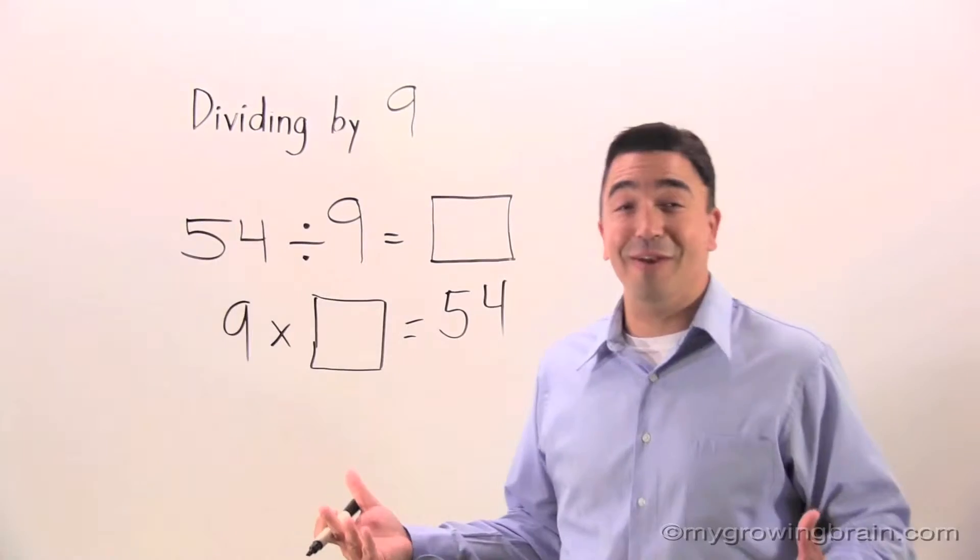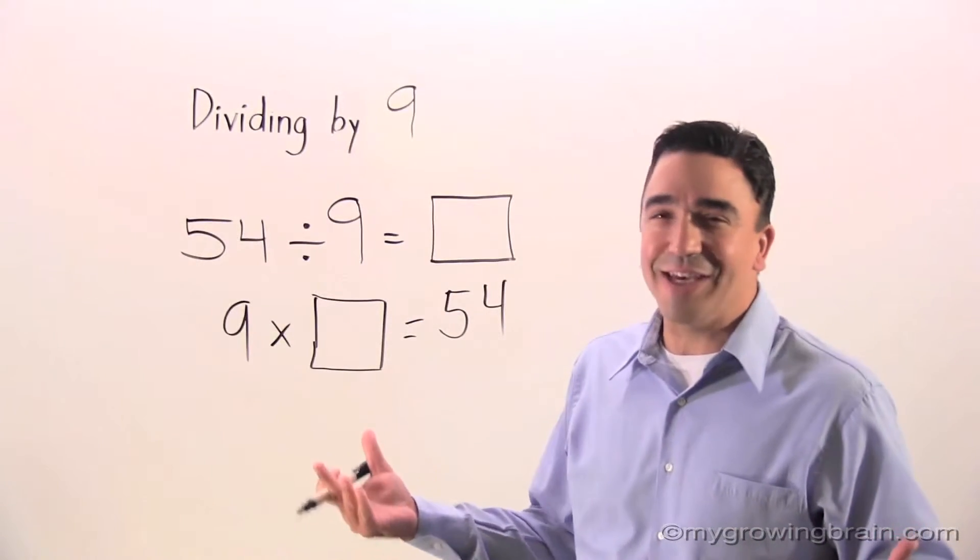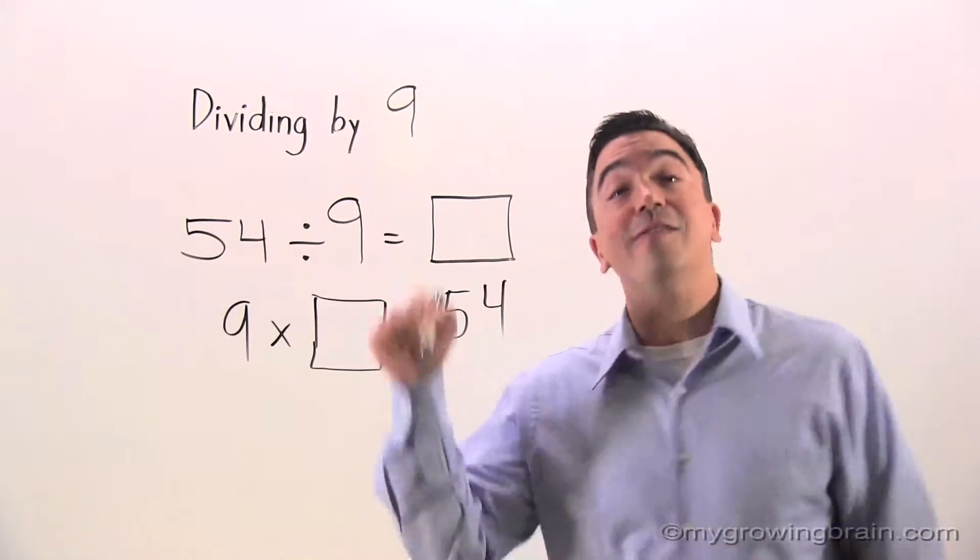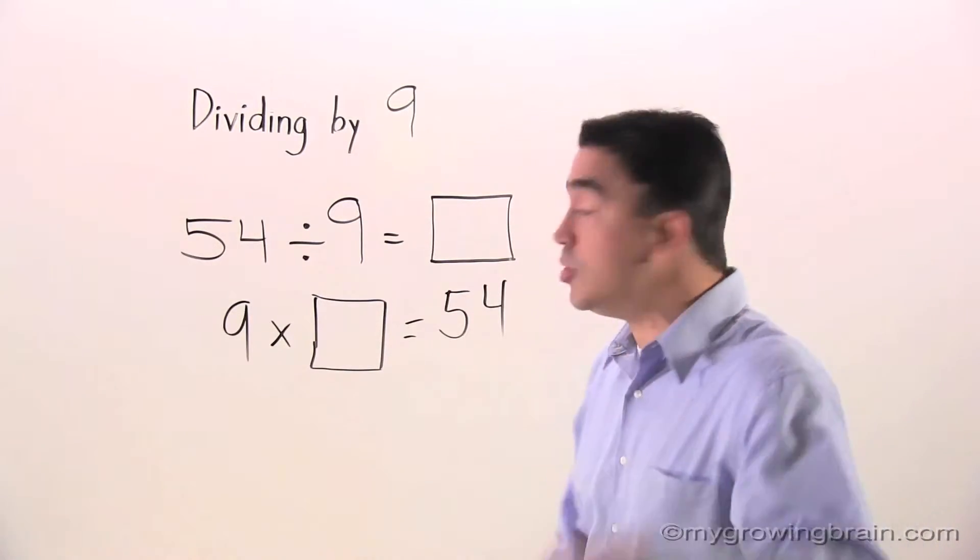9 times blank equals 54. Now here's my specialty. I love multiplication. 9 times 6 is 54. And I knew that and you knew that. Let's write it.